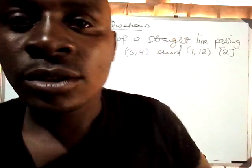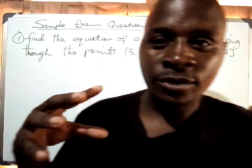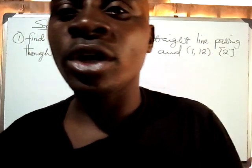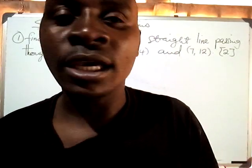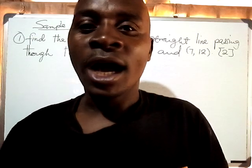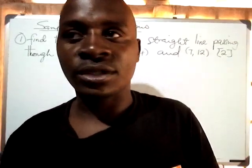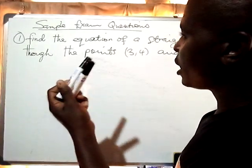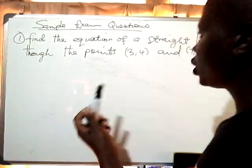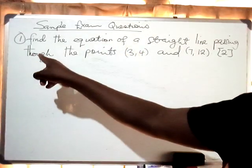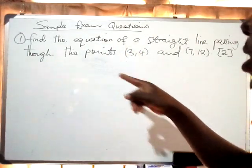Hi friends, we will now look at sample exam questions so that we see how questions normally come under coordinate geometry. We have a question which says: find the equation of a straight line passing through two given points.